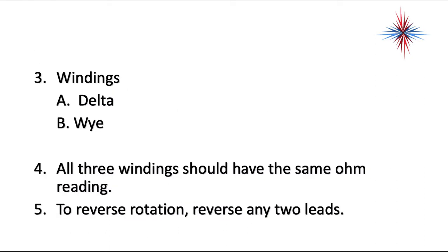There's two winding configurations, a delta and a Y configuration. All three windings should have the same ohm reading. That's extremely important when you're troubleshooting. That's a big difference from single-phase equipment. Single-phase equipment, you'll remember start, run, and common all have different ohm readings. In three-phase, that is not the case. You do not have a start, run, and common. You have an L1, L2, L3.